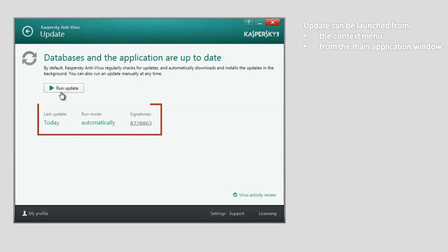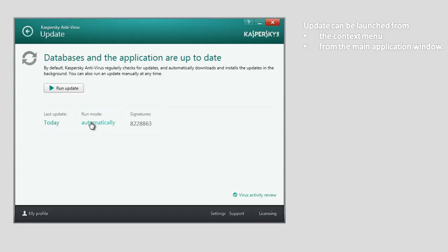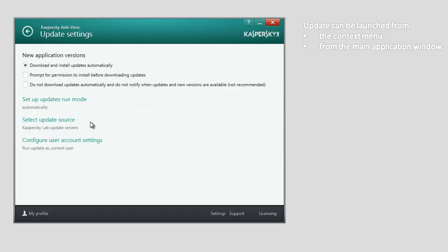The update window displays information about the current state of Kaspersky Antivirus 2014 databases, the date of the last update, and the run mode. To configure the update settings — including run mode, update source, and rights to run updates under a different user account — click the link stating the run mode name.